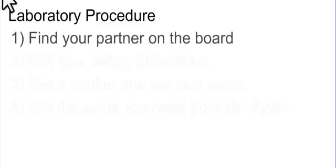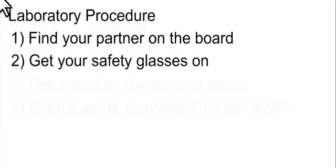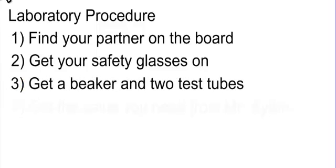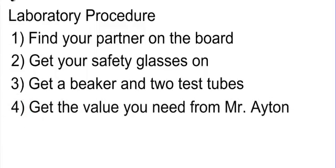Next is the laboratory procedure — you might want to go through this a few times. Number one, find your partner on the board and start to get to work. If your partner's not there, come to me and I'll assign you a group. Number two, get your safety glasses on — that counts as part of your grade. Number three, get a beaker and two test tubes from my front desk. Number four, you can also get the value you need from Mr. Aiden; come get it from me and I'll give it to you.